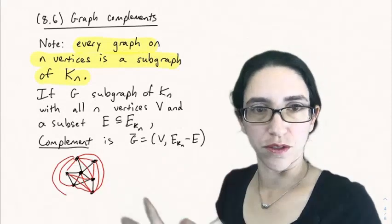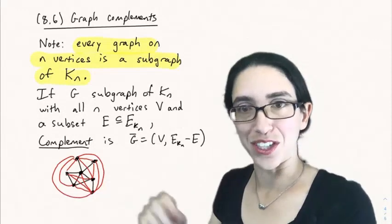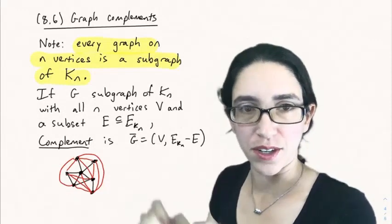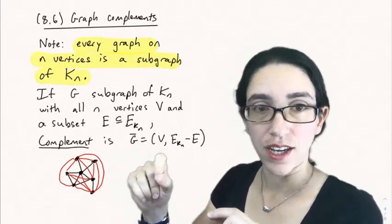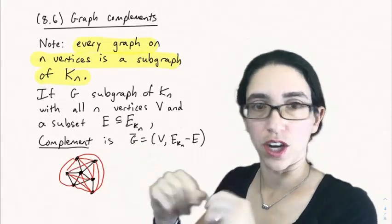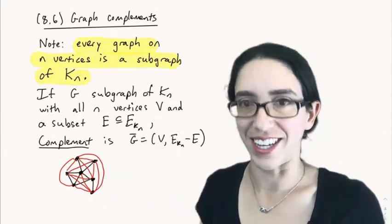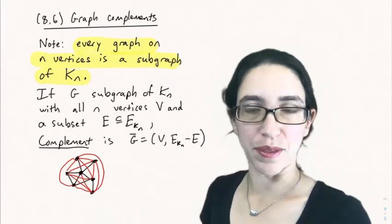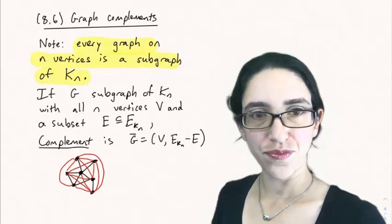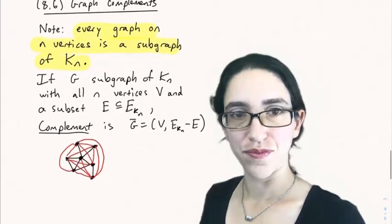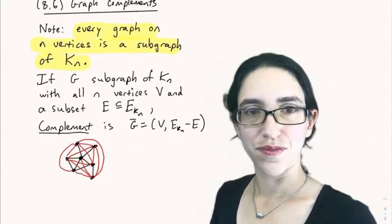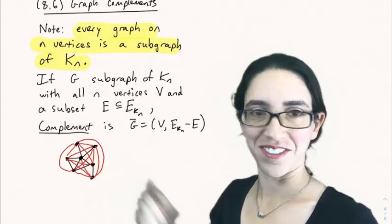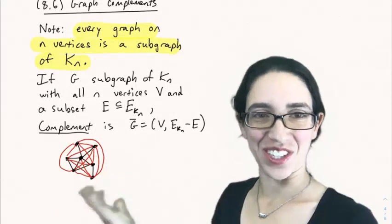So one model for this is if you have a bunch of people and some of them are connected on social media, maybe they're friends on some social media platform, then you can draw a black edge if they're connected. And then the complement is showing who is not connected to each other, right? And you can study that graph as well to get some information about the system. There's the final edge being drawn. And there's the complement of the graph.